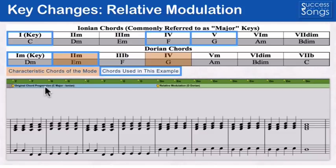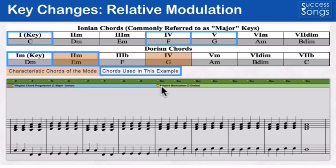I've also outlined here the original chord progression — our C major Ionian chord progression — showing the C, F, G, G progression. And then I've outlined when it changes to this relative modulation going to D Dorian, which just has D minor and E minor repeated. You'll be able to see all this as it's happening while you're listening to it. So let's take a listen to that.